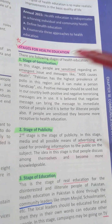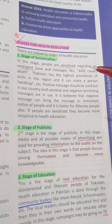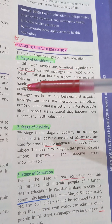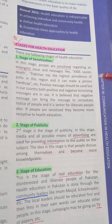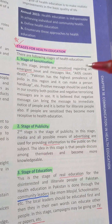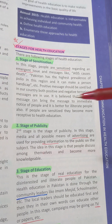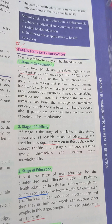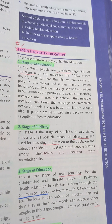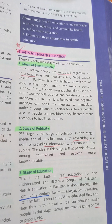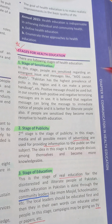Looking at these stages in detail: stage one is sensitization, where people are sensitized regarding an emergent issue. Messages like 'AIDS causes death' or 'Pakistan has the highest prevalence of polio in this region and it can make a person handicapped' are used. Both positive and negative terrorizing messages are in use in our country, as negative messages can bring the message to immediate notice of people and are better understood by illiterate people. When people are sensitized, they become more receptive to health education.